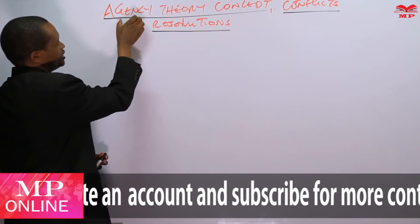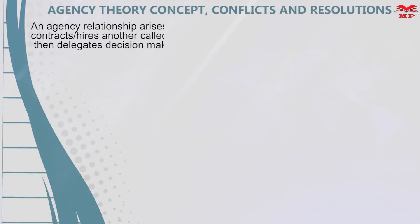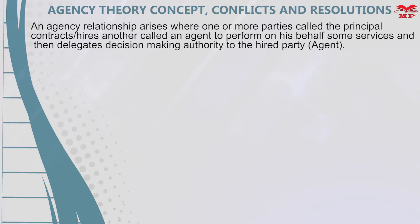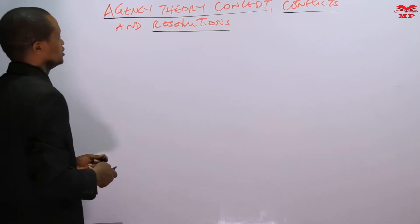What do we mean by agency or agency theory? An agency relationship arises where one or more parties, called the principal, contracts or hires another, called an agent, to perform on his behalf some services, and then delegates decision-making authority to the hired party, who is known as the agent.